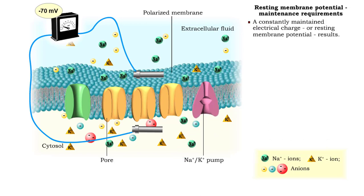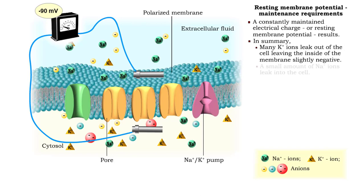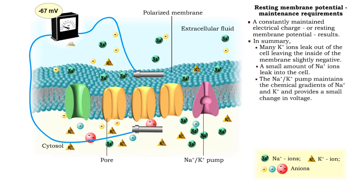The result is a constantly maintained electrical charge across the membrane. In summary, many potassium ions leak out of the cell, leaving the inside of the membrane slightly negative. A small amount of sodium ions leak into the cell.